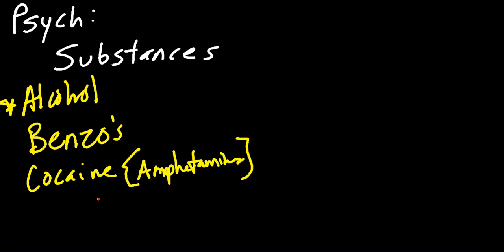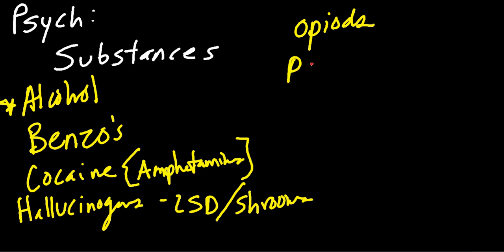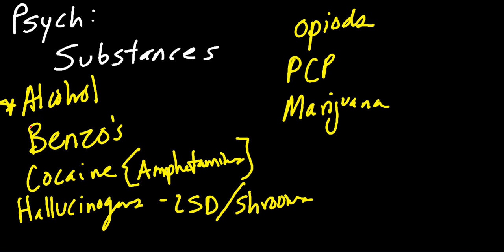We'll cover hallucinogens, including LSD and shrooms. We'll also cover opioids — heroin is a big one, and there'll likely be a buzzword or question on test day for that. We'll also talk about PCP or angel dust, and then probably end with marijuana. These are very common drugs you'll see in real life, and more realistically, you'll see them in board test questions.